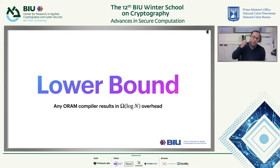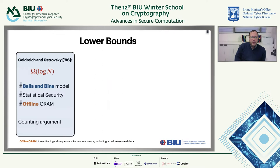Let's start with the lower bound. The lower bound says any ORAM compiler results in a blow-up of log N — you take a RAM program and compile it to an oblivious RAM program. The work of Goldreich and Ostrovsky already showed that ORAM overhead is Ω(log N), based on a counting argument.